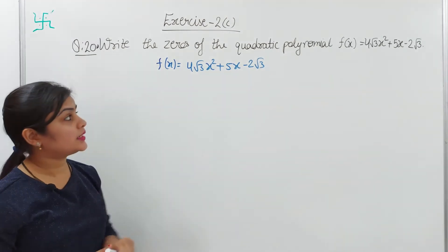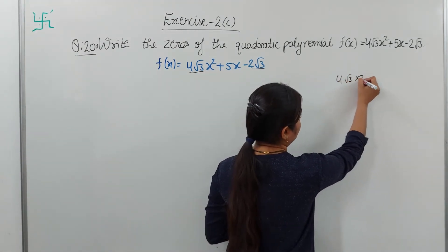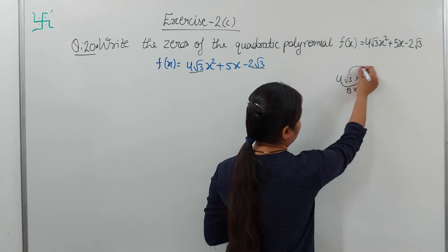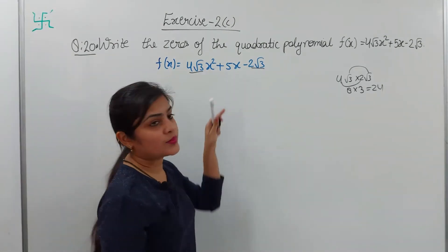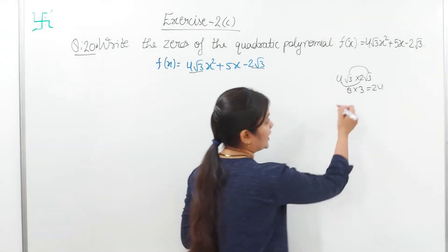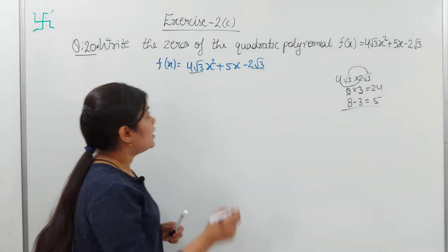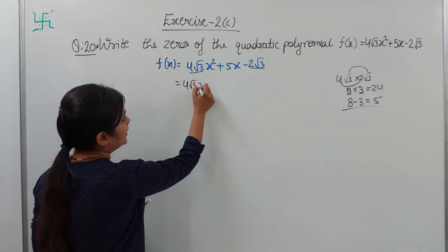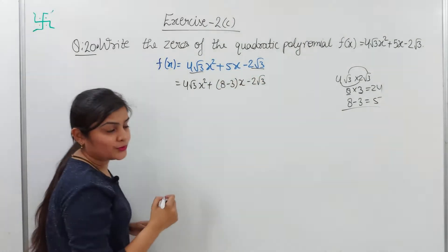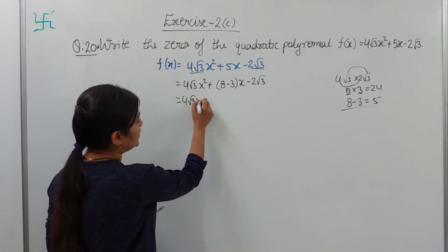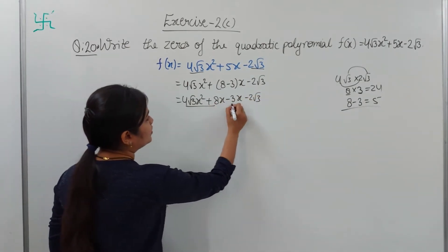To find zeros, we first factor the polynomial. Multiply 4root3 and 2root3: 4root3 into 2root3 = 4×2 = 8, and root3×root3 = 3, giving 24. We need factors of 24 whose sum is 5 — that is 8 and minus 3, since 8 minus 3 = 5. So: 4root3·x² plus 8x minus 3x minus 2root3.